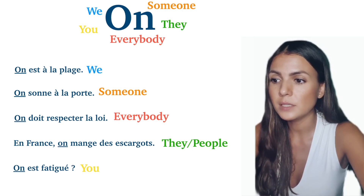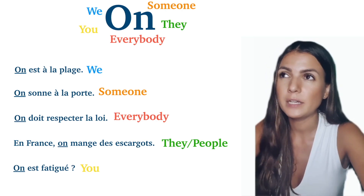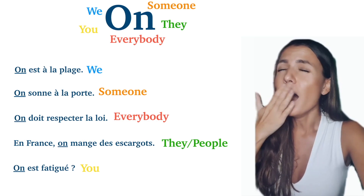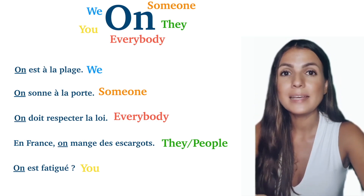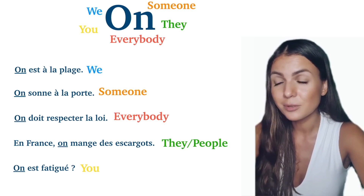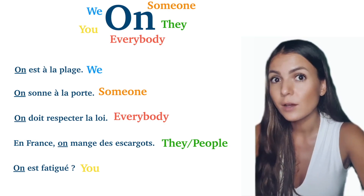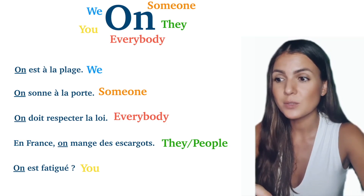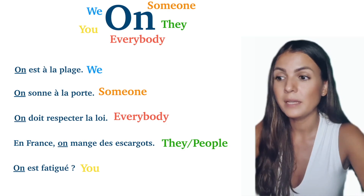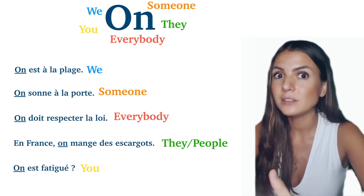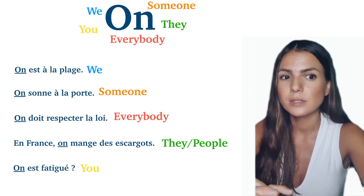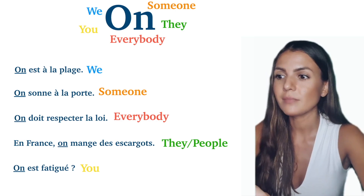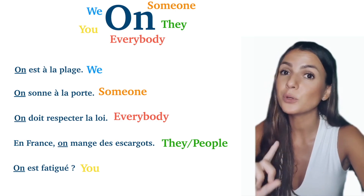The last meaning is 'you' — this one is the most tricky. Imagine you arrive home tired, and your family says 'oh dis donc, on est fatigué' — meaning 'oh, are you tired?'. Similarly, if someone is getting mad in front of you, you can say 'on est énervé' — meaning you are mad. So in this context 'on' means 'you'.